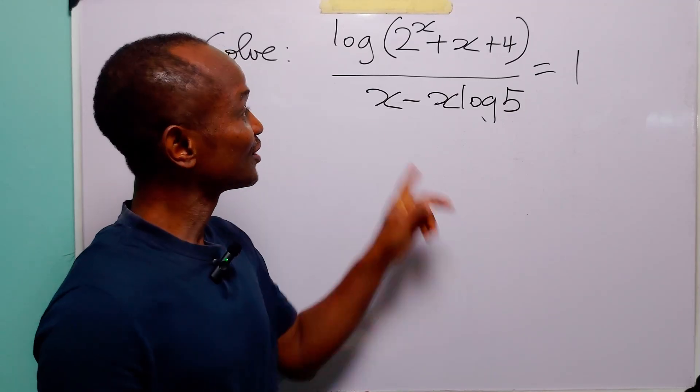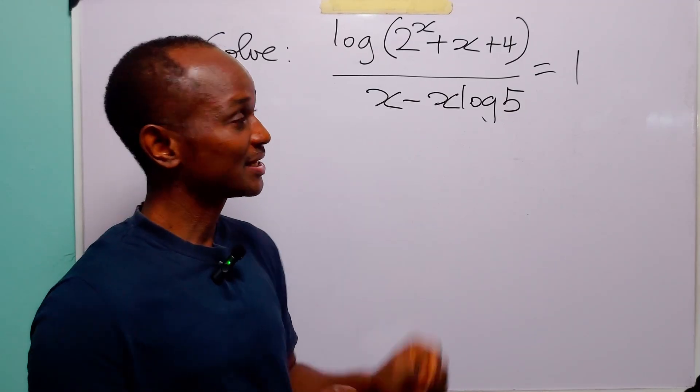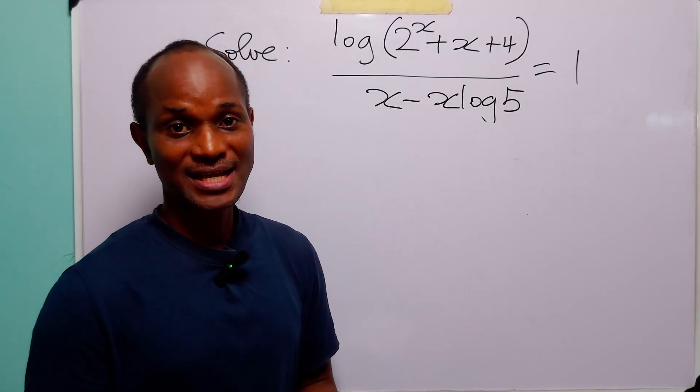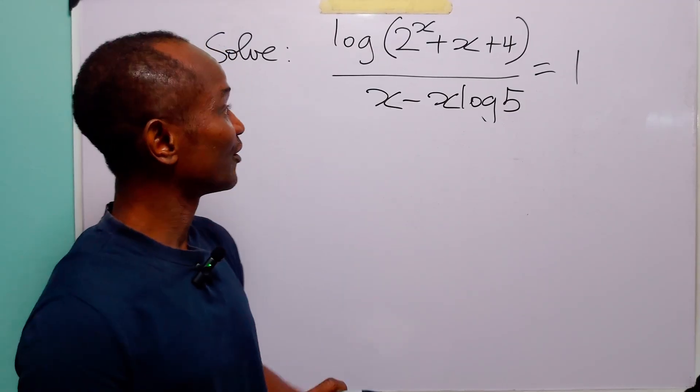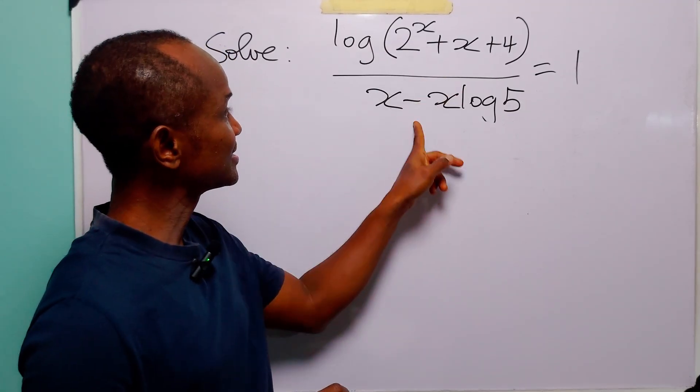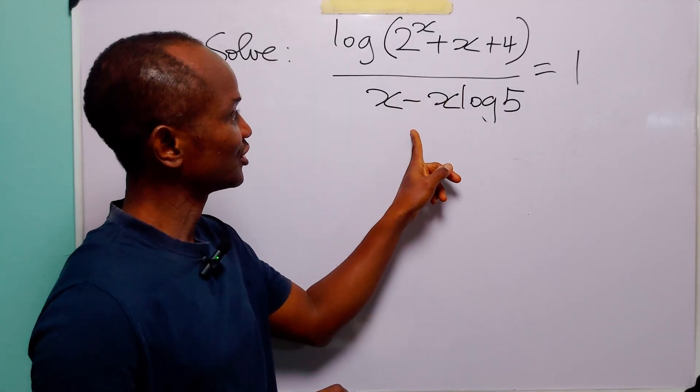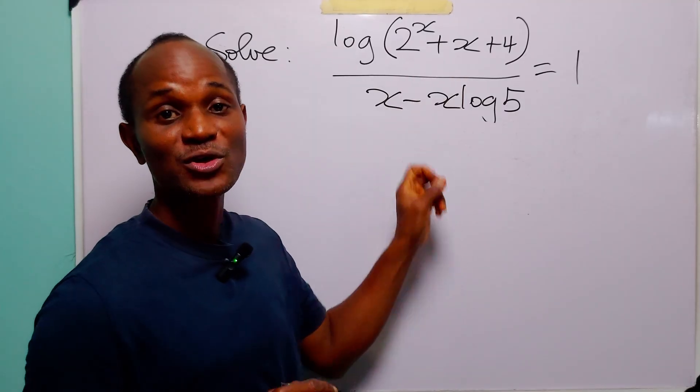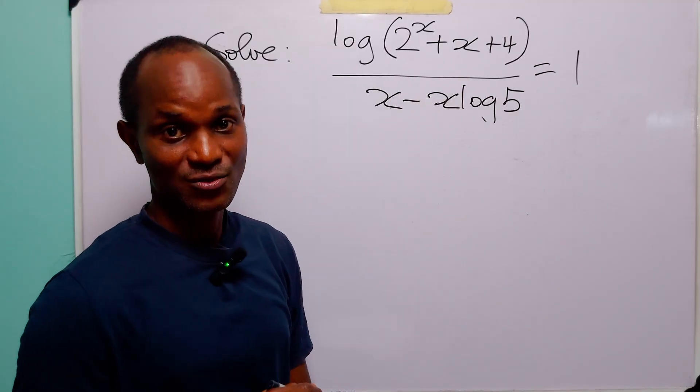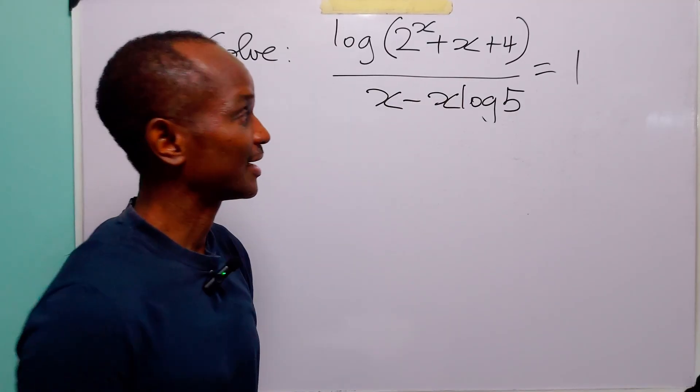Hello and welcome. To solve this logarithmic equation, let us start by getting rid of this fraction, and of course to do that we cross multiply.